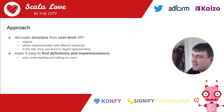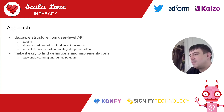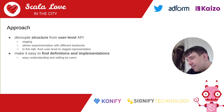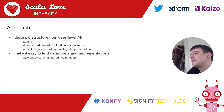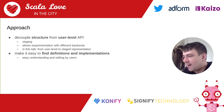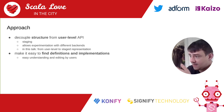The approach we took is we decoupled the structure from the user-level API — this is also called staging. We have this intermediate representation which allows plugging in different backends. In this talk we're going to focus on how we get from a user-level API to the structure — not what we do with the structure, which is actually the interesting difficult part, but here it's a DSL talk. What we also wanted to do was make it very easy to find where things are, which was of course part of the goal to make it easy for users to edit code and understand what's happening.